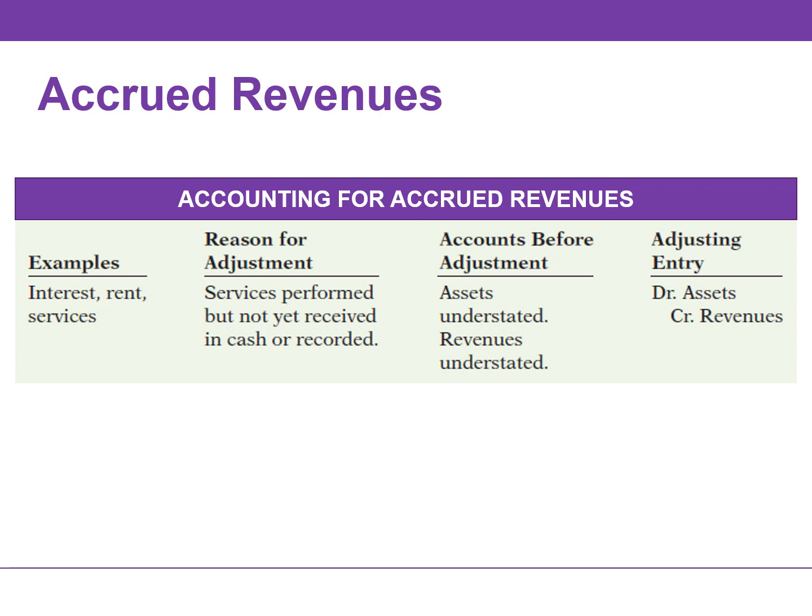Examples of accrued revenues include interest, rent, and services performed but not yet collected. Without the adjusting entry, both assets and revenues are understated. The adjusting entry debits an asset and credits a revenue account.